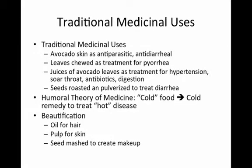In terms of traditional medicinal uses for the avocado, many different parts of the plant were used to treat various ailments, such as hypertension or diarrhea. It is also included in the humoral theory of medicine practiced by some Caribbean islands, such as Cuba and Dominicana, and therefore considered to be a cold remedy used to treat diseases classified as hot diseases, such as infection or inflammation. It was also used for beautification, such as to add luster to hair or to smooth the skin.